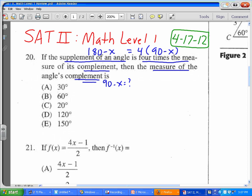Well, we have an equation here that says 180 minus x is equal to 4 times 90 minus x. If I distribute the 4 in here, I'm going to have 4 times 90, that's 360, and then 4 times the minus x, that's minus 4x.